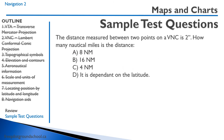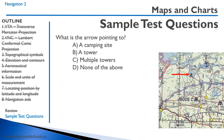Another practice question: the distance measured between two points on a VNC is two inches — how many nautical miles is that? On a VNC, one inch equals eight nautical miles, so two inches equals 16 nautical miles. This is not dependent on latitude because each minute of latitude always equals one nautical mile. Next question: what does a particular arrow symbol point to? The answer is B — a tower. It's not a campsite, not multiple towers, not none of the above.